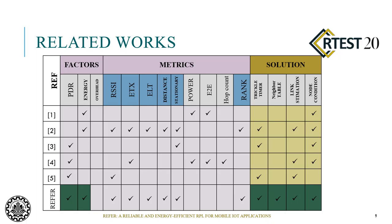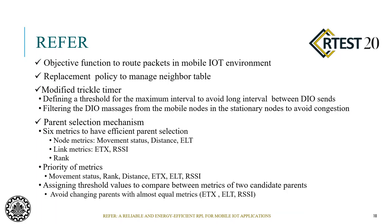In this related works table, we have listed five prior works. As you can see, in previous work the goal was to improve only one of the factors — reliability or energy consumption. But in our proposed algorithm, both of these factors are important. The solution consists of a trigger timer, neighbor table management, link estimation, and node condition. Prefair is an objective function to route packets in the mobile IoT environment.